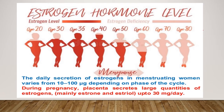Estrogen levels vary among individuals; they also fluctuate during the menstrual cycle and over a female's lifetime. This fluctuation can sometimes produce effects such as mood changes before menstruation or hot flashes in menopause.